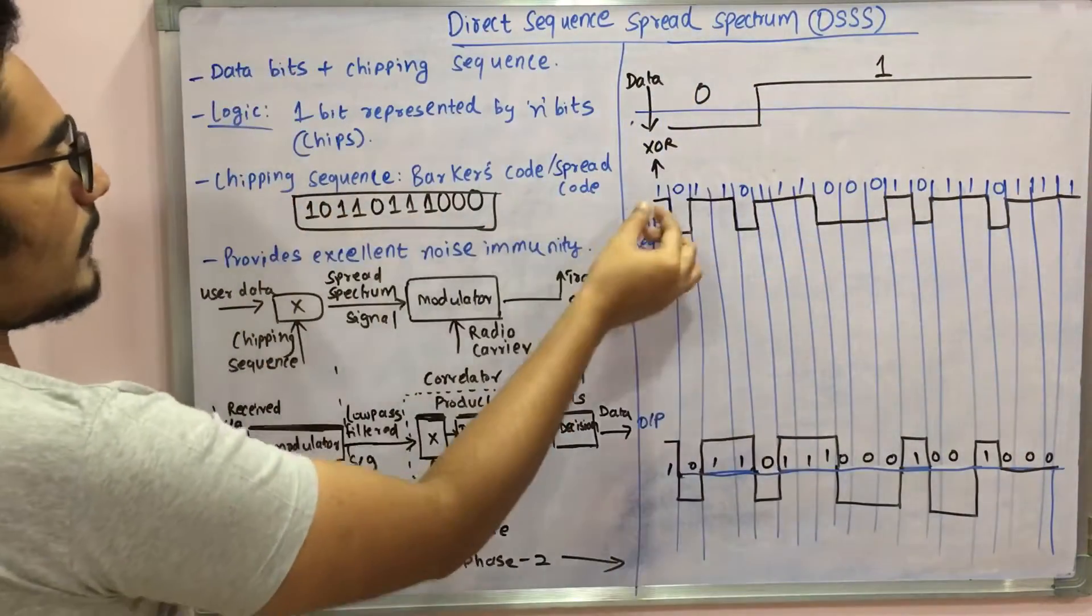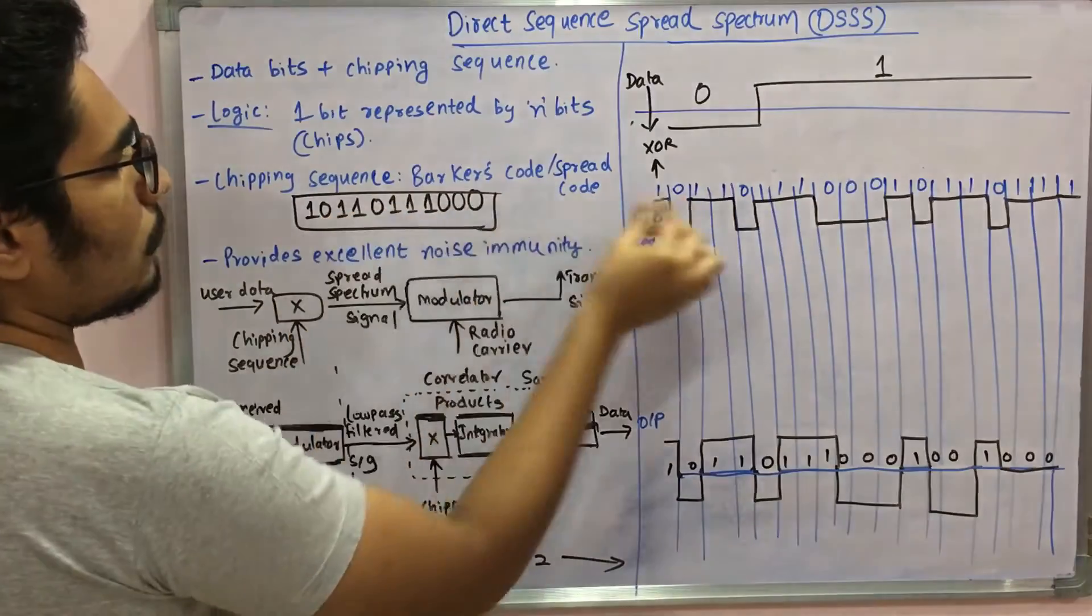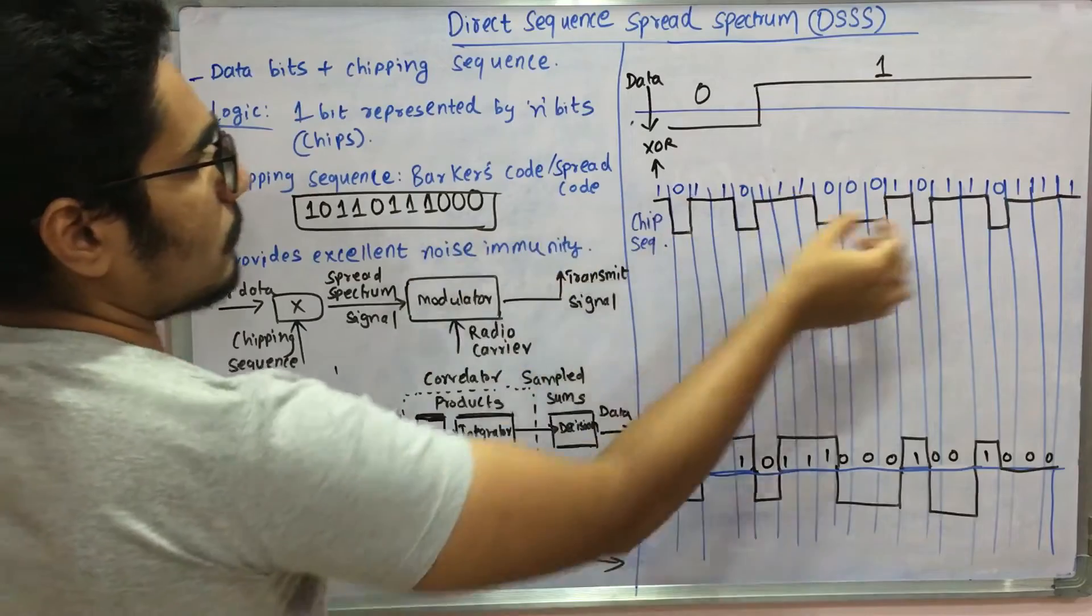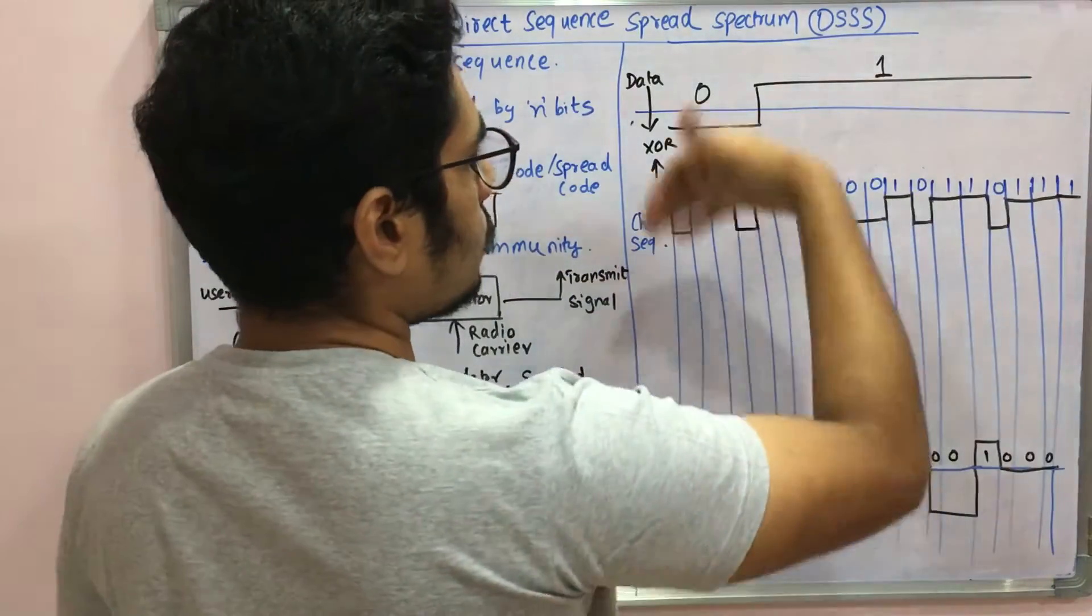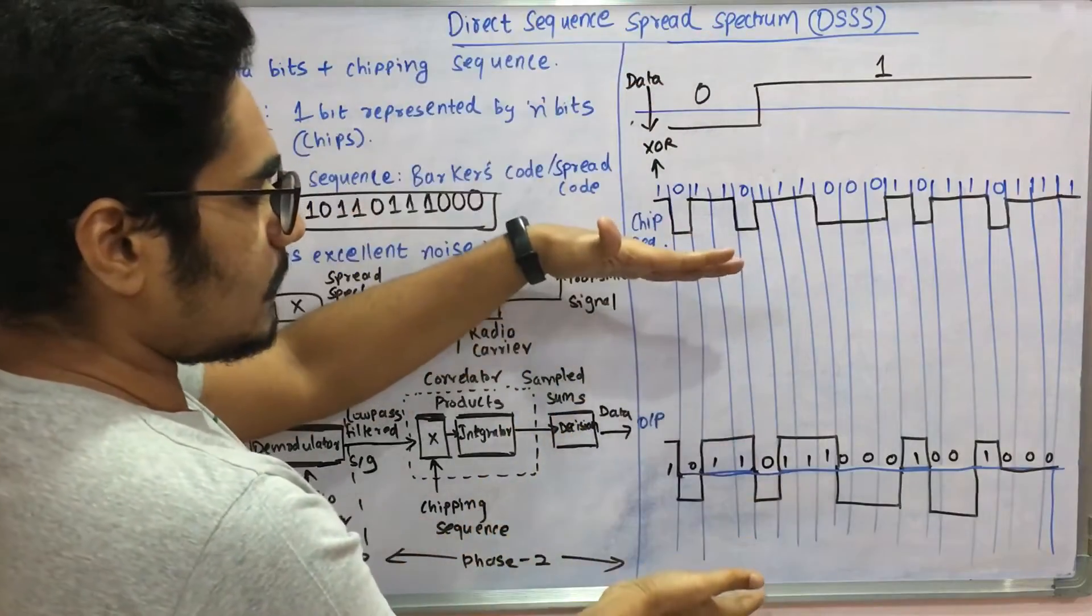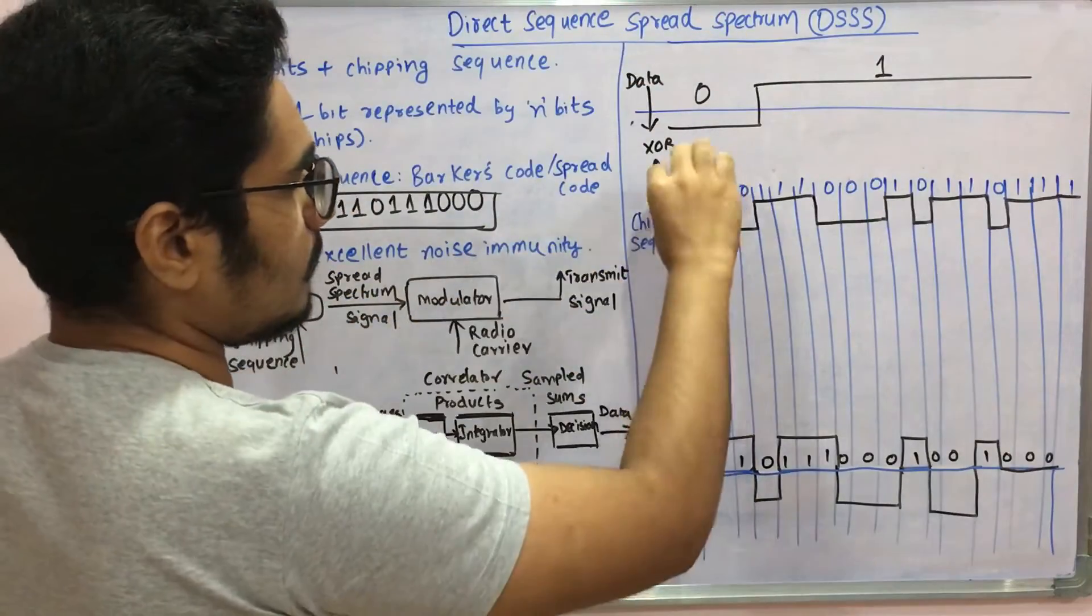You have this chipping sequence in this way: you have one, then zero, then double one, then zero, then triple one, then triple zero. The chipping sequence is applied. When you multiply this chipping sequence with this data, you get the resultant output in this way.